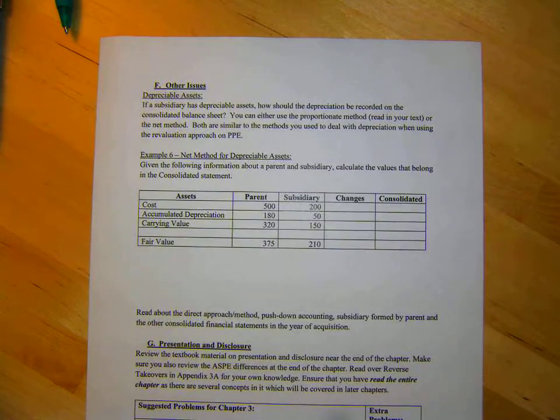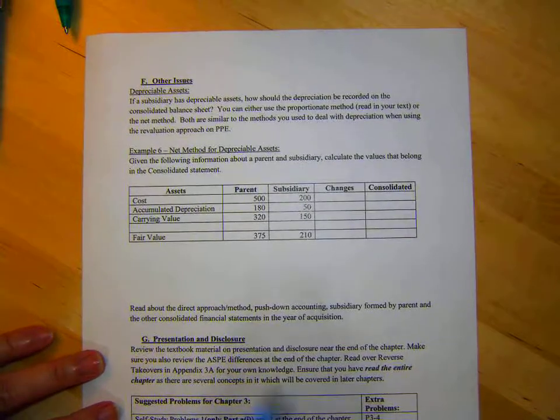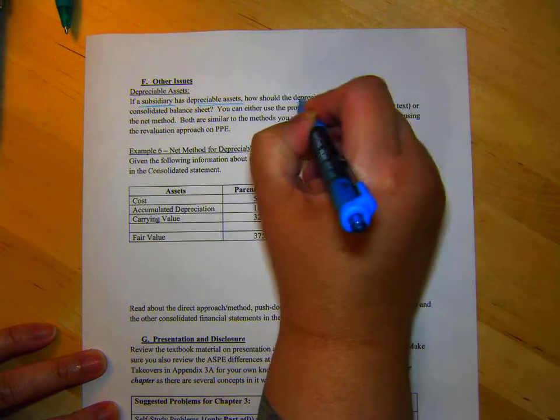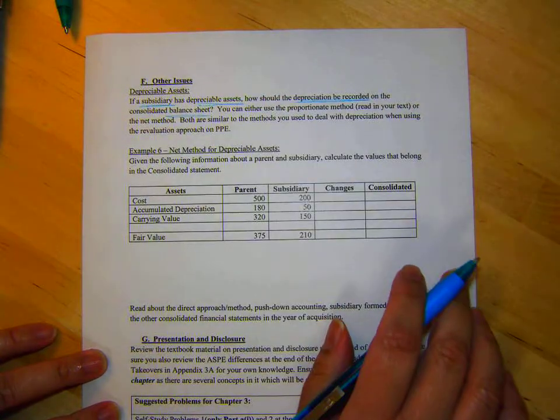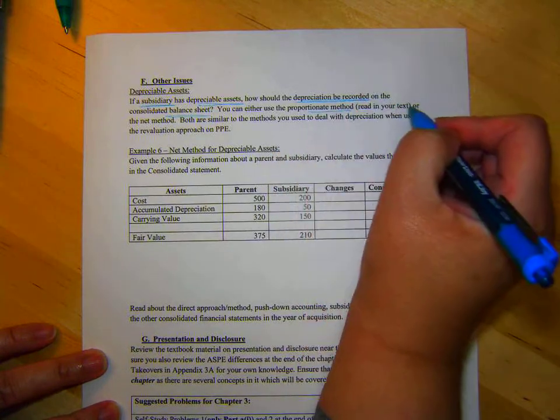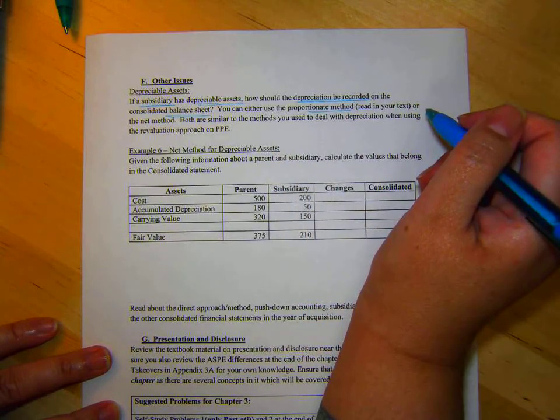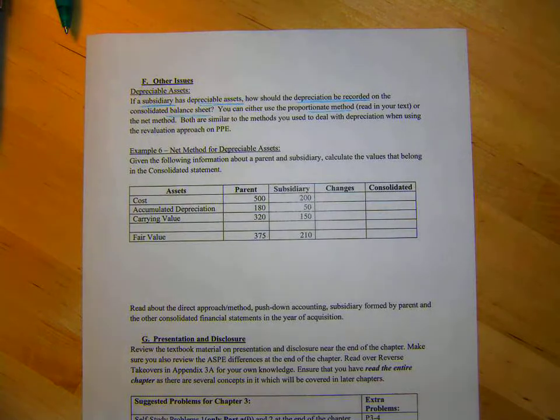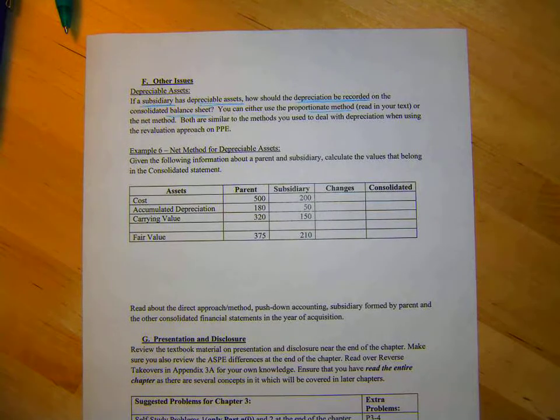Okay, so the last page here of Chapter 3, we're looking at Part F. If a subsidiary has depreciable assets, how should the depreciation be recorded on the consolidated balance sheet? You can either use the proportionate method, you can read in your text. I don't think we make you do it, but just go over and look at it. It's similar to how you did the revaluation approach for capital assets when you had to recalculate accumulated depreciation. I won't test you on it.